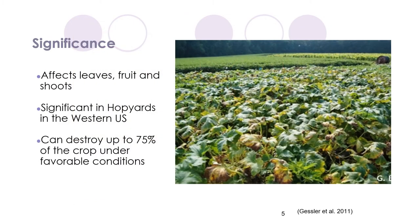The disease is very significant to several extents, including that it affects the leaves, the fruits, and the shoots of the plants that it infects. It is very significant in hop yards across the western United States, being the biggest threat to such farms. Under the correct conditions and without proper treatment, downy mildew can destroy up to 75% of a crop yield.